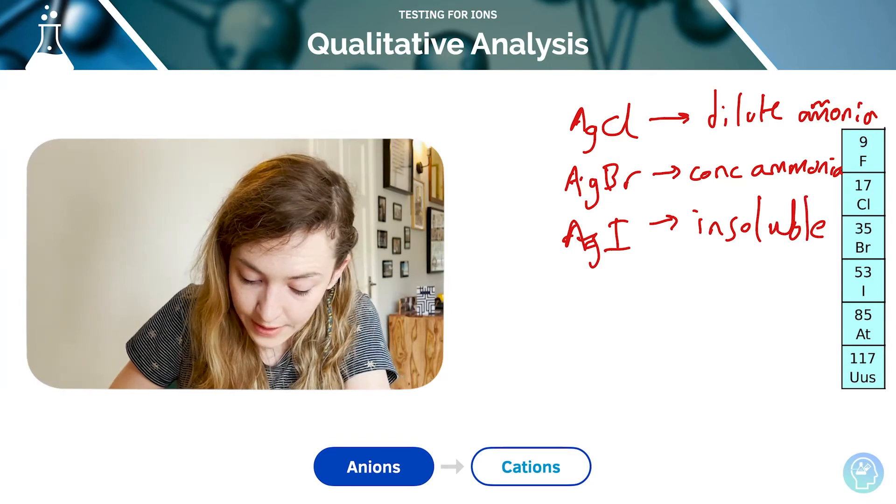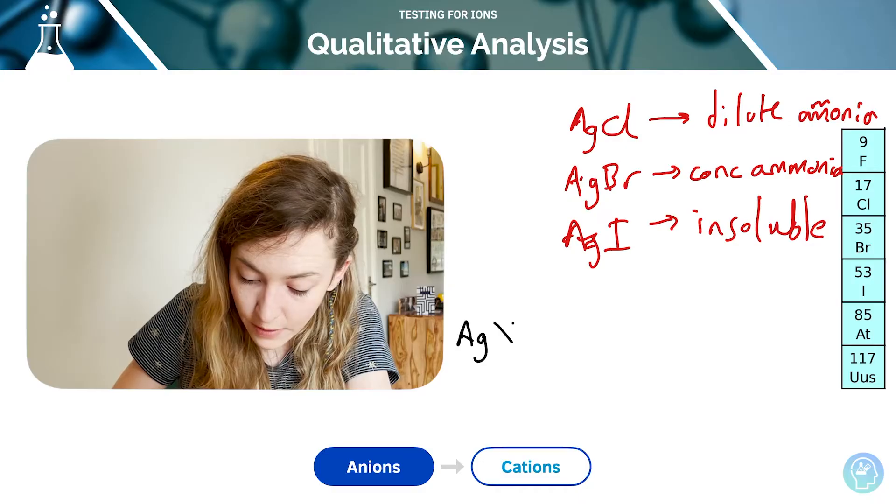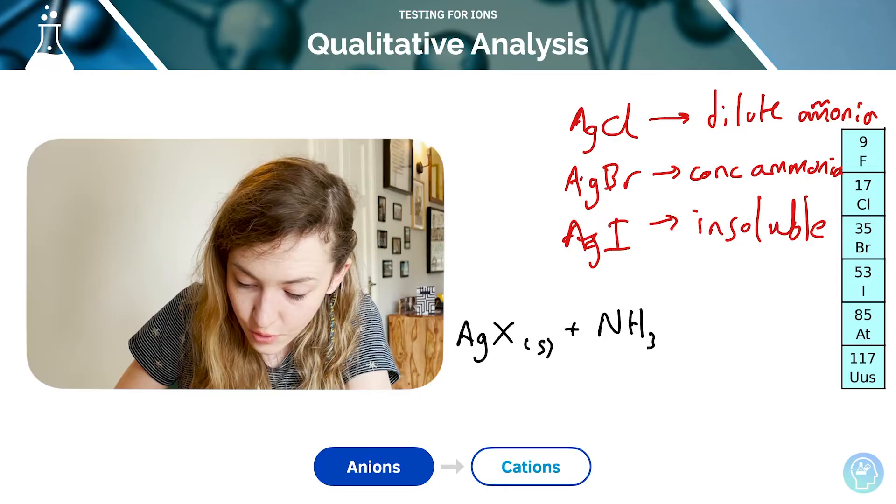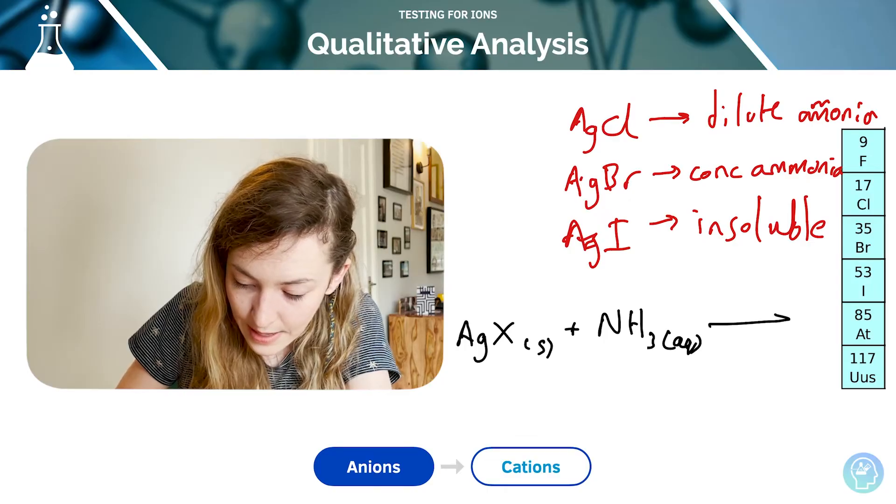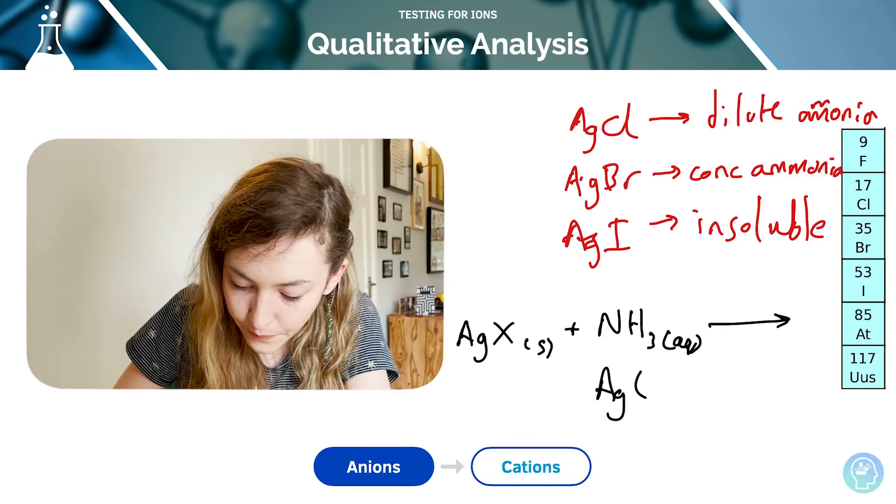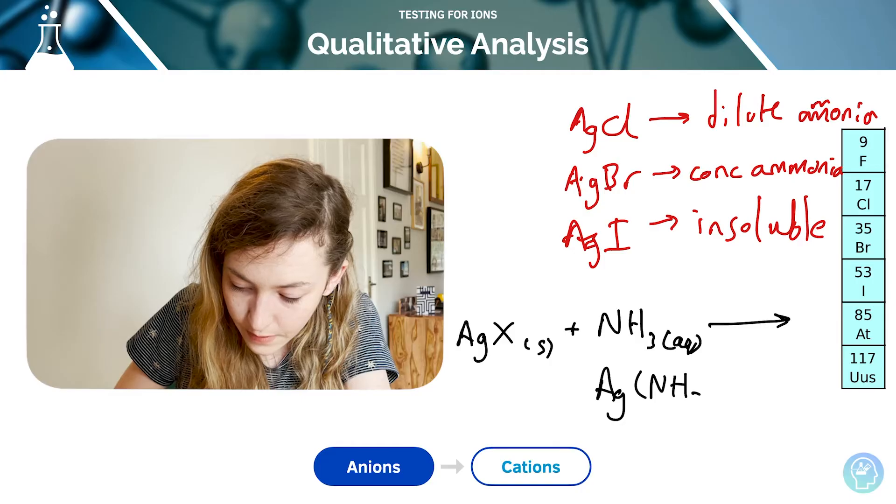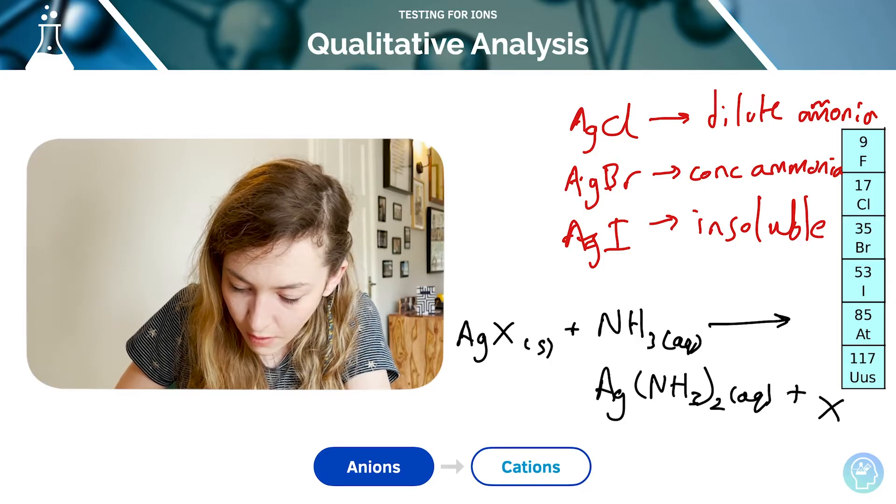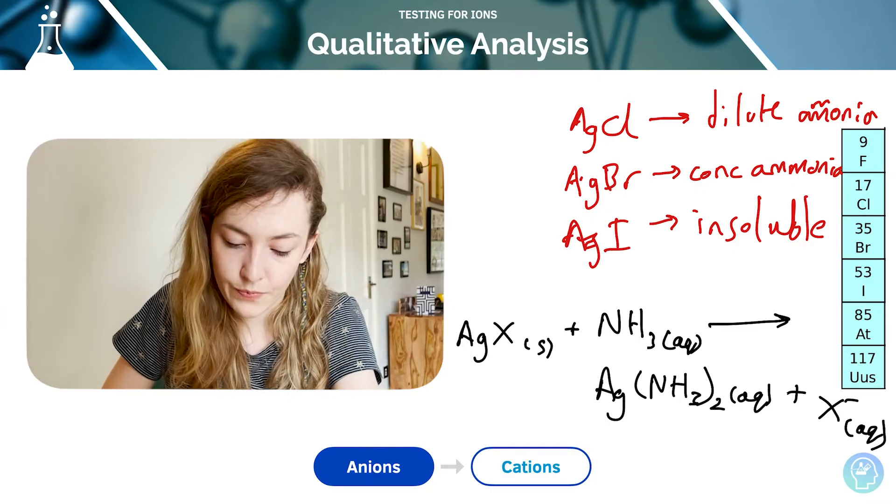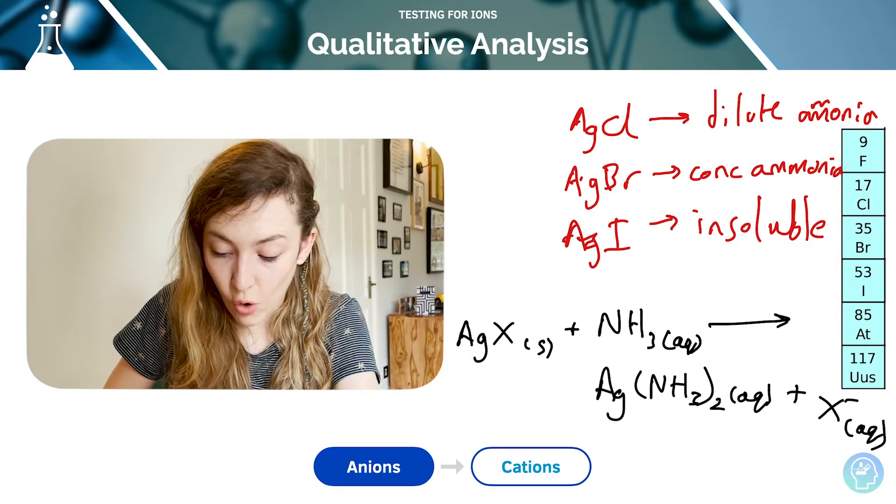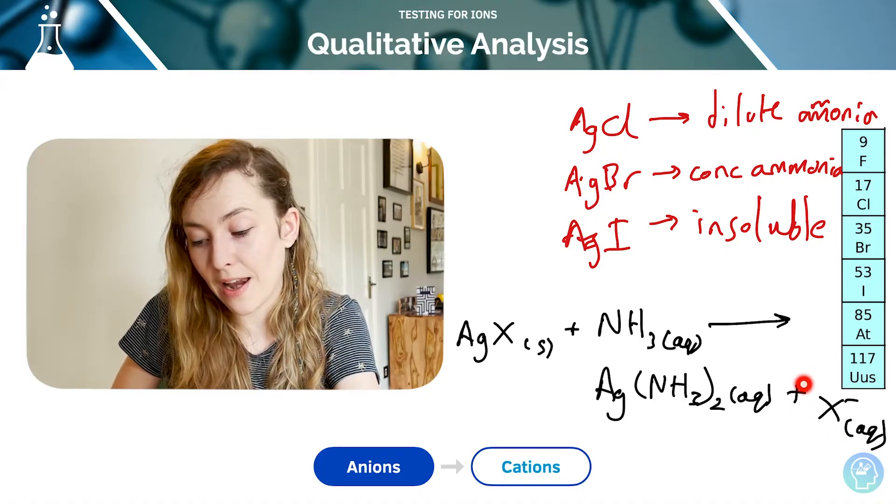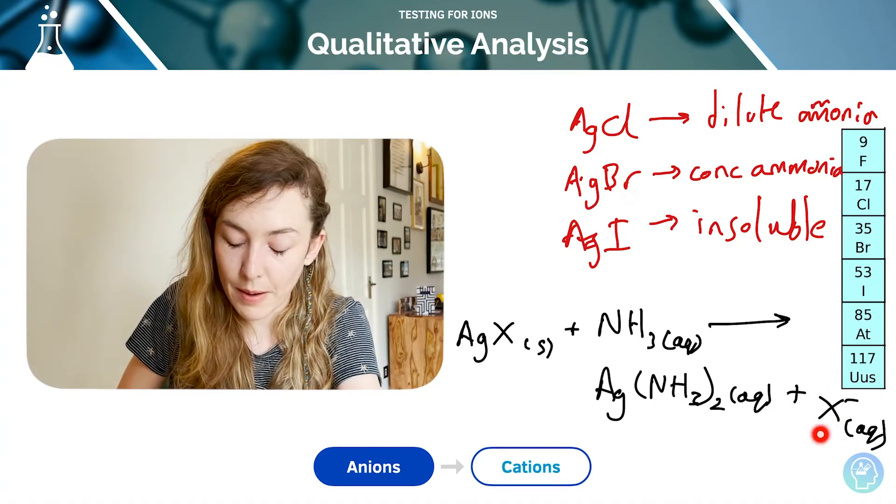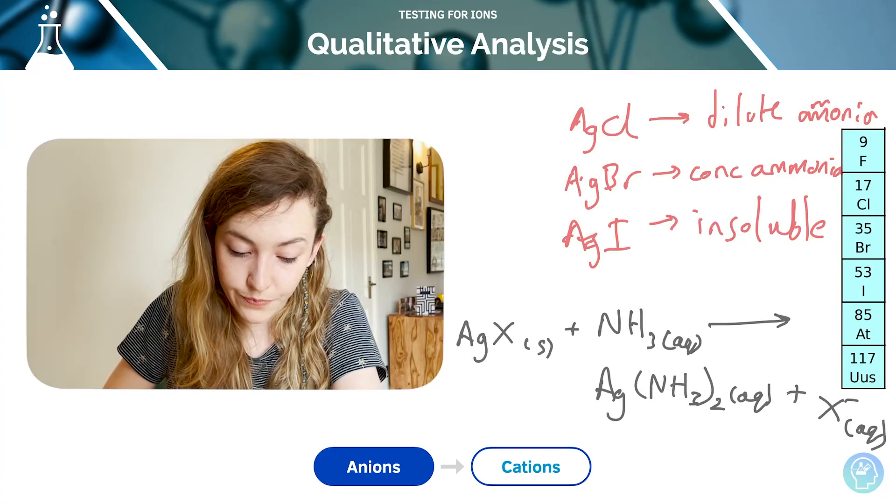What that looks like in a reaction would be my silver halide, which is a solid reacting with ammonia, NH3, which will be aqueous. It's going to form this complex, and then our X⁻ aqueous. That's why the precipitate is dissolved, because my halide ion, if it is a chloride or bromide, is going to be able to distribute back into the solution.